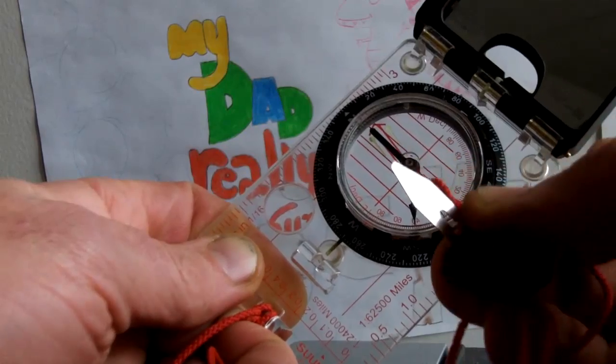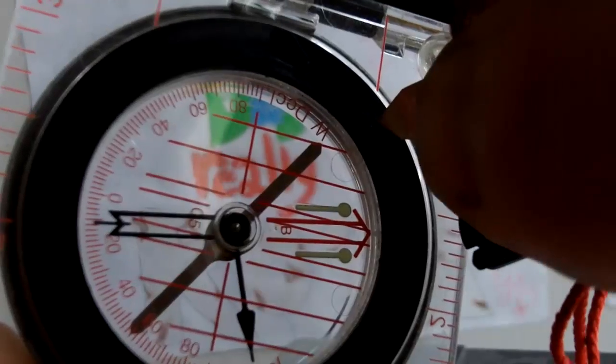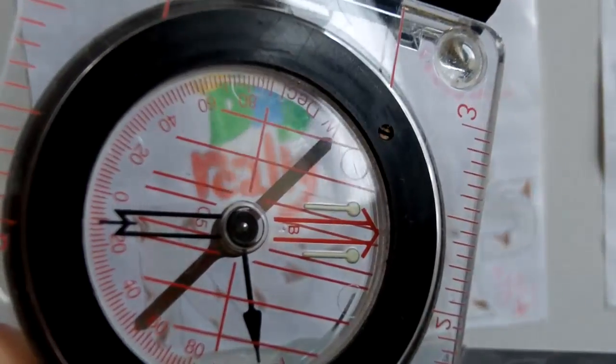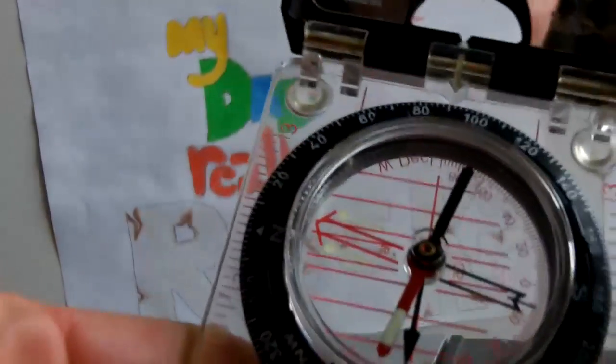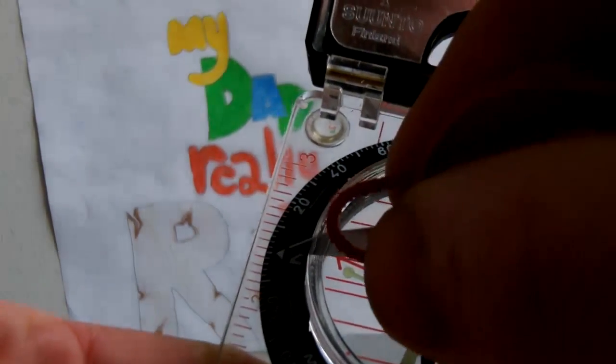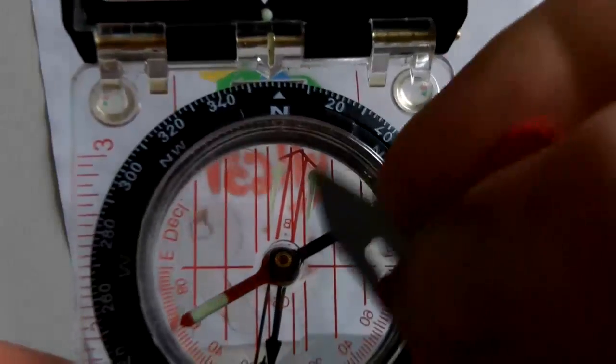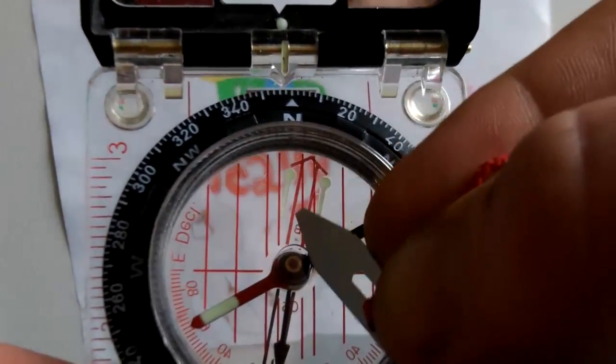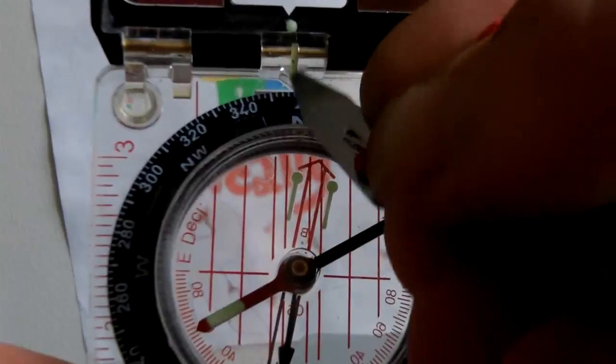Turn it until the compass dial is corrected for your declination. We have 8.5 degrees to the east, so we turn this dial 8.5 degrees so the compass dial is pointing west of our magnetic north indicator.